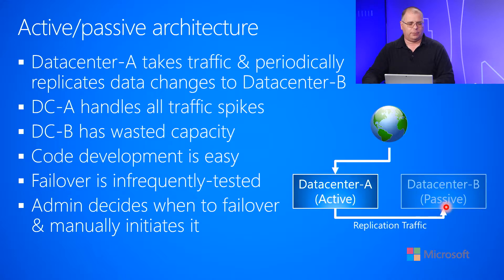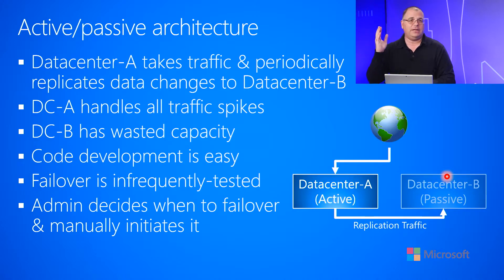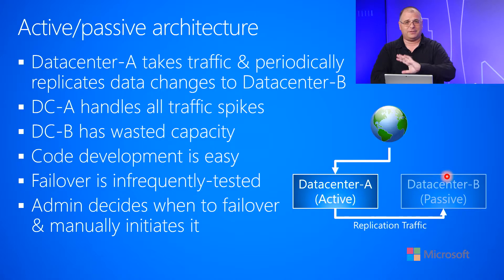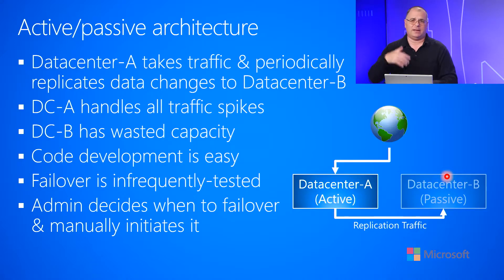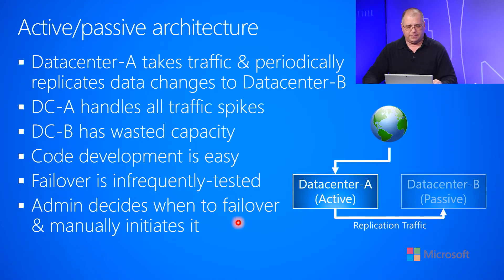Code deployment is easy into both data centers. But failover is infrequently tested — what's the likelihood you'll actually test this scenario and force a failover to occur? Some cloud providers won't even allow you to shut off your service to test if traffic goes to the other data center. This ends up being very difficult to test, and if a disaster scenario occurs you're left hoping for the best — and if it doesn't work you're left scrambling, having paid a lot for development that isn't working. Also the administrator decides when to do the failover and manually initiates the change.